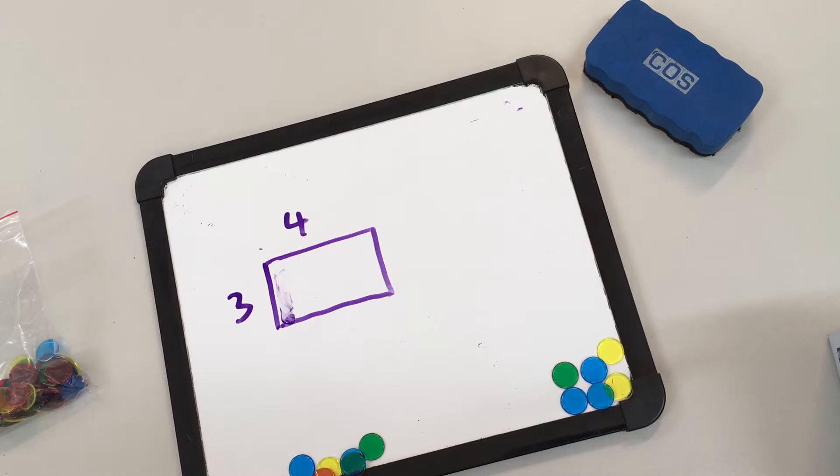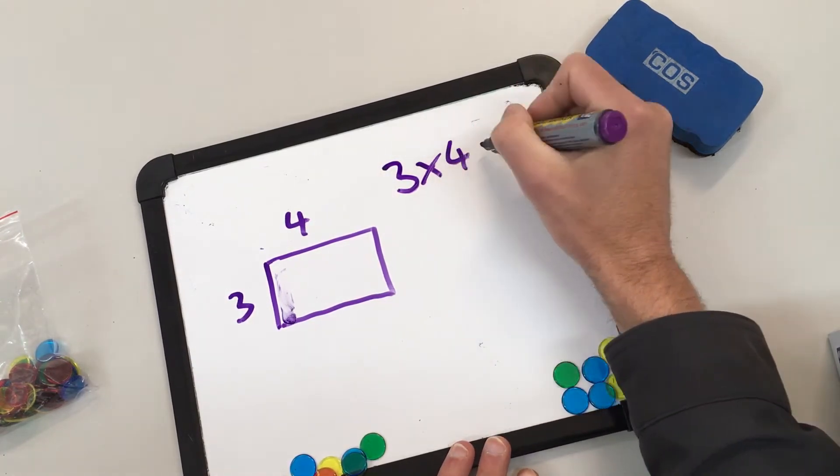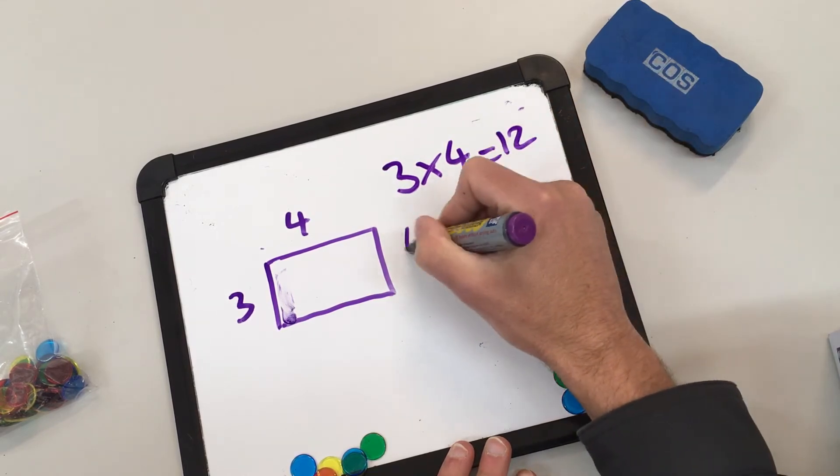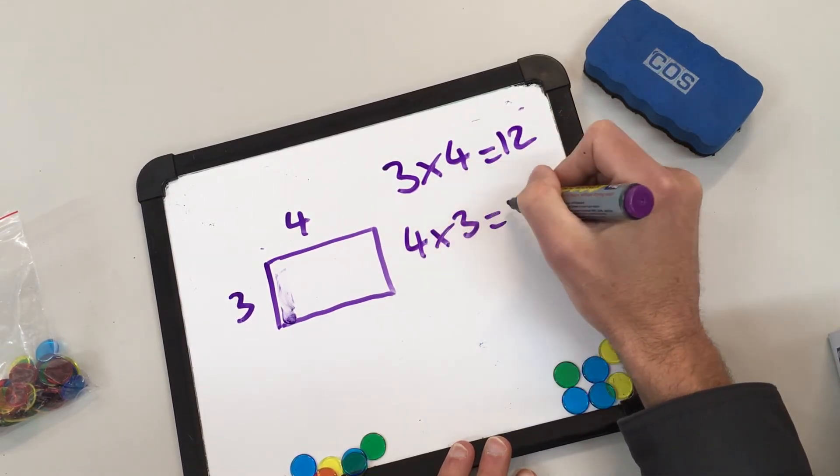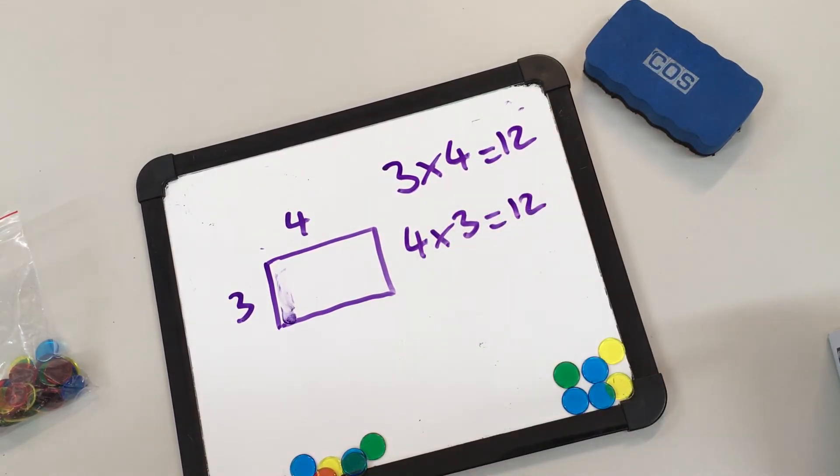Now the wonderful thing about multiplication facts is that every time you learn a new fact, it is important to share that new fact. So today we've just learned that three times four equals twelve. We also learned that four times three equals twelve. So the next step is to always recall that fact that you've just learned. Let's tell our brothers and sisters, let's call up nan and pop, let's write it down on a big piece of paper and stick it on the fridge: three times four equals twelve.